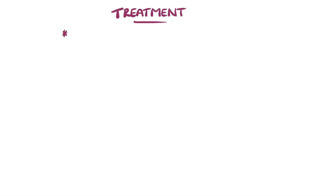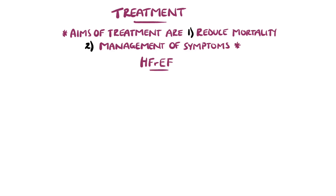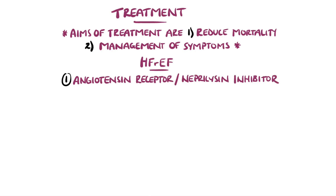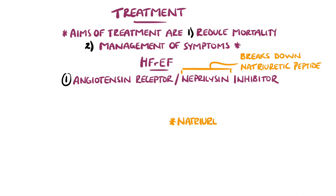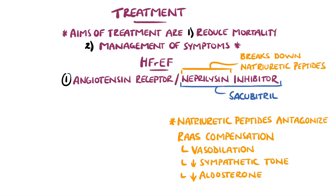The main aims of treatment are to reduce mortality and to manage the symptoms. Generally, pharmacological management is the first line. For heart failure with a reduced ejection fraction, there are several medications that have been shown to reduce mortality. A relatively recent change is the introduction of an angiotensin receptor neprilysin inhibitor as a first-line agent. Neprilysin is a peptide that breaks down several peptides including natriuretic peptide. This is important because natriuretic peptides antagonize the detrimental renin-angiotensin compensatory mechanism, leading to vasodilation, less sympathetic tone, and reduced aldosterone levels, which together means less cardiac remodeling and a lower mortality.